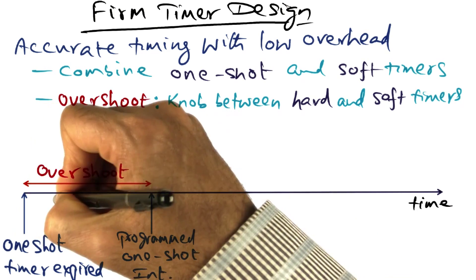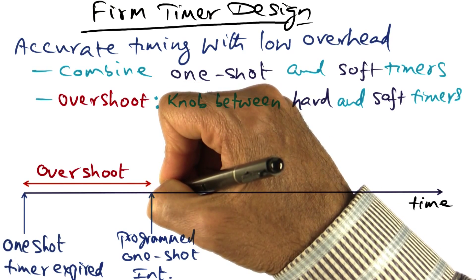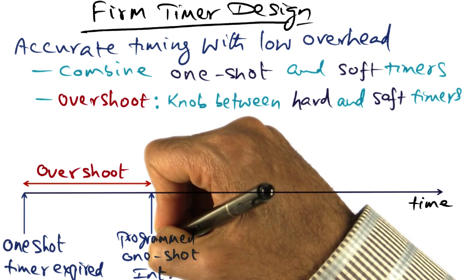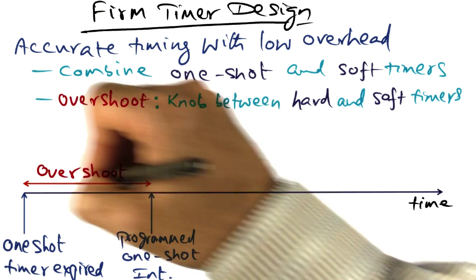So there is a distance between the actual event happening and the point at which the one shot timer has been programmed to interrupt the CPU. This is the overshoot parameter.